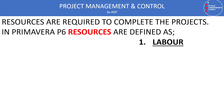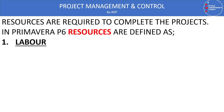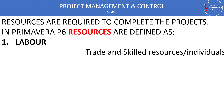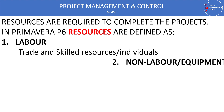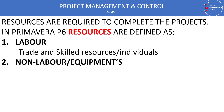In Primavera P6, resources are required and must be defined. We use three types of resources. The first type is labor, which can be any skilled or non-skilled individual. For example, if our company has a project manager, we can assign that specific project manager to a project as a labor resource.